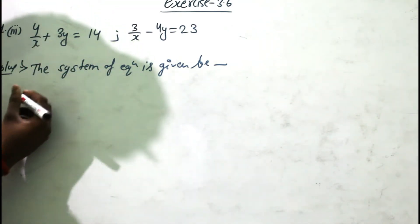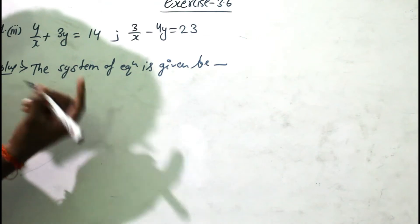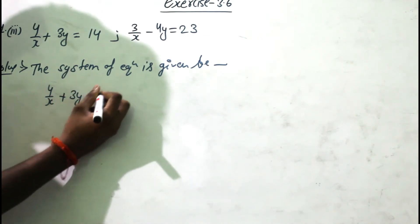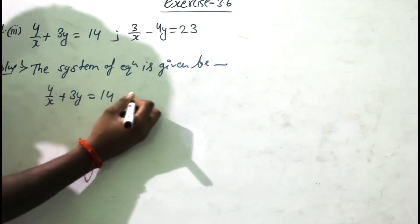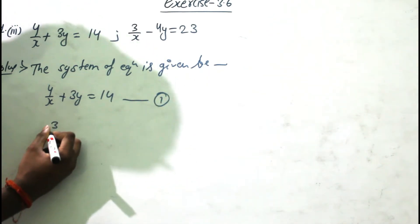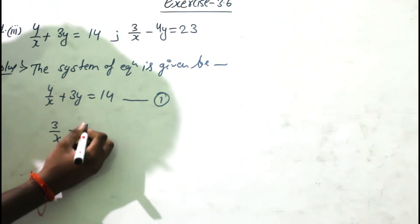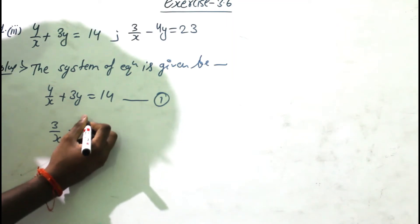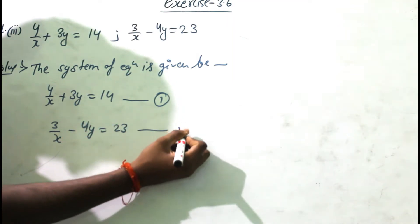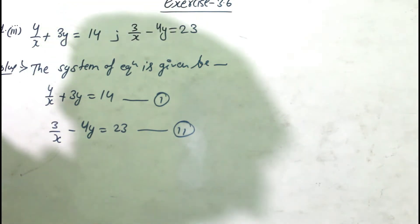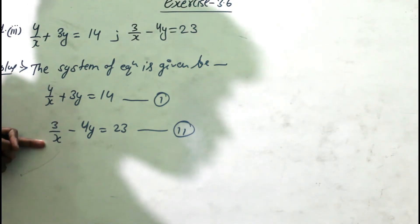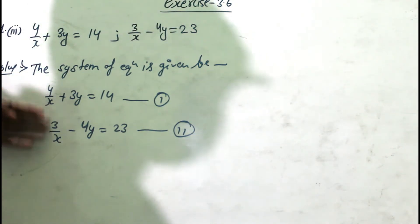The system of equations given is: equation number one is 4/x + 3y = 14, and equation number two is 3/x - 4y = 23. We can see that 1/x is common in both equations.